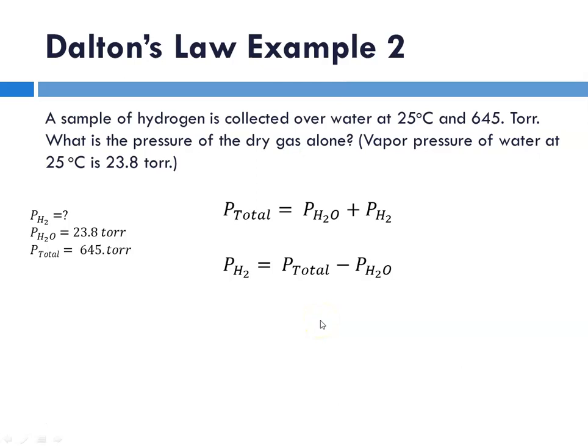Again, a little bit of algebra there. So plugging in numbers, the partial pressure of hydrogen is our total, 645, minus our water, which is 23.8. So the pressure of the hydrogen is going to be 621.2, which will round to 621 torr.